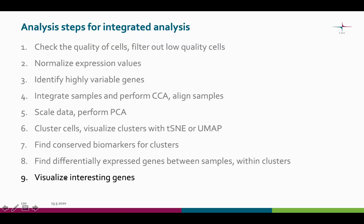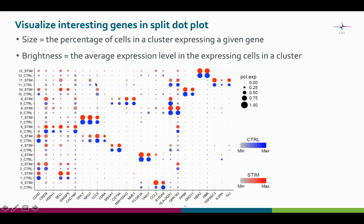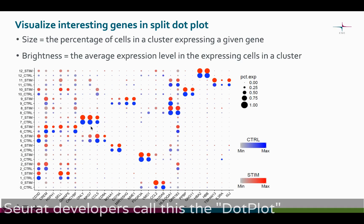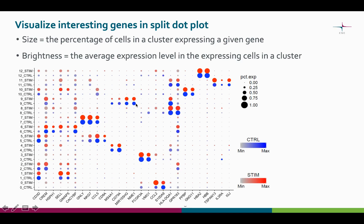The last step in this two-sample pipeline is the visualization of interesting genes. These genes can come from the list of conserved markers, or they can be the differentially expressed genes between the samples, or just your personal genes of interest. This plot, that we like to call the Marimekko plot, shows two things at once: the percentage of cells expressing a gene is shown as the size of the dot, and the brightness of the dot represents the expression level.